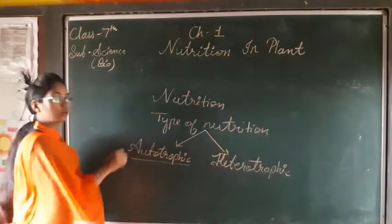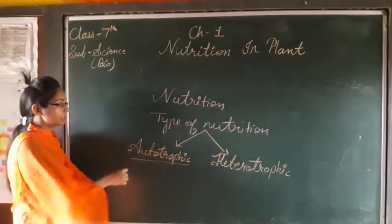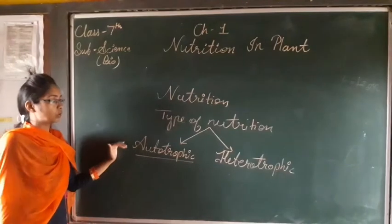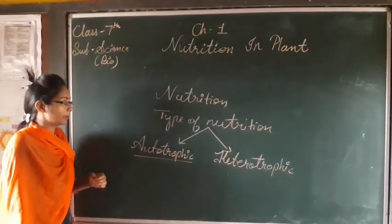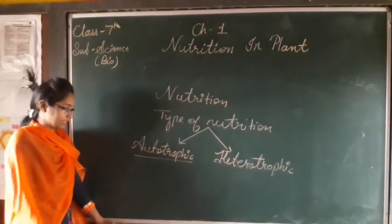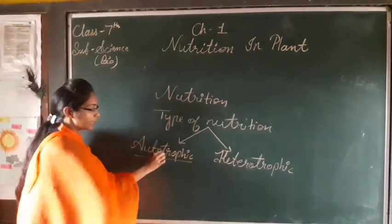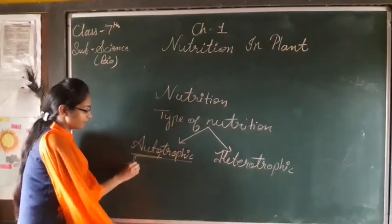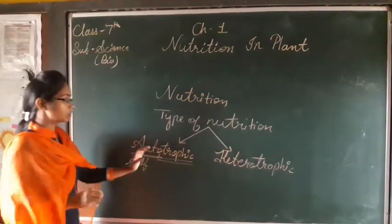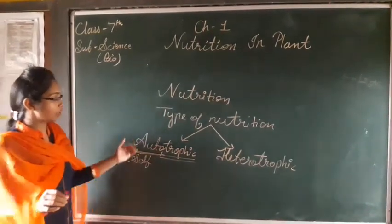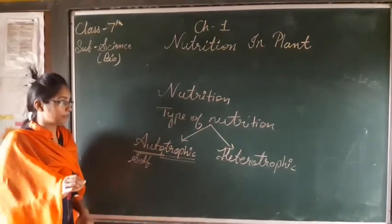What is phototrophic mode of nutrition? The type of nutrition in which organisms prepare their own food is called phototrophic mode of nutrition. 'Auto' means self, so organisms that prepare their own food are called autotrophs, and such type of nutrition is called autotrophic or phototrophic nutrition.